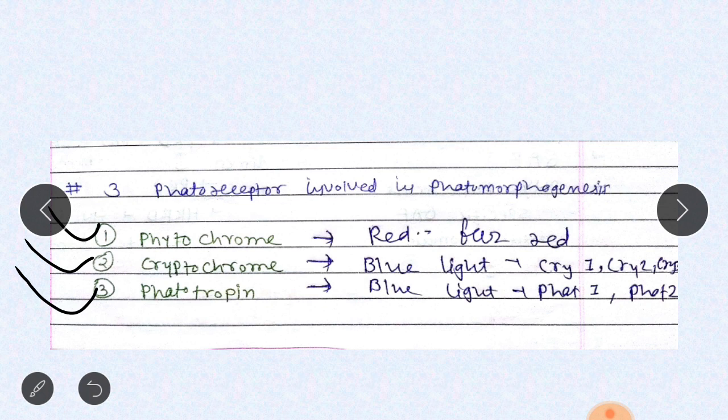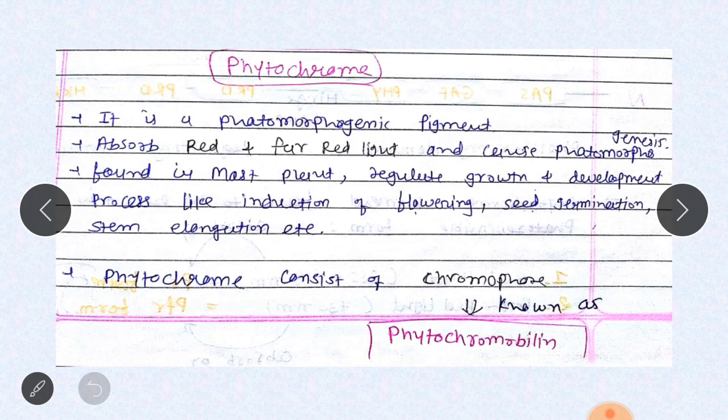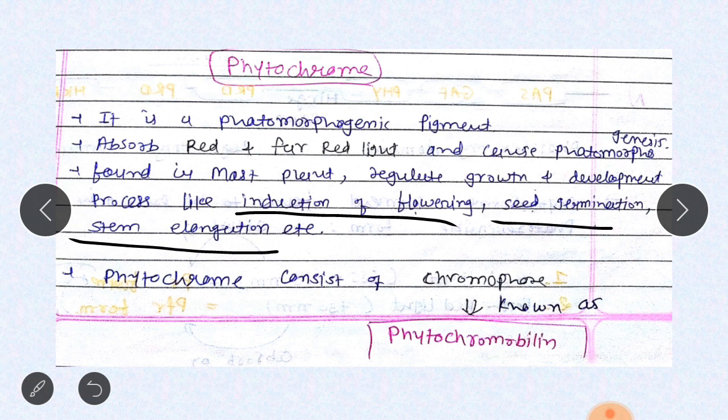Phytochrome is a photomorphogenic pigment that absorbs red and far-red light and causes photomorphogenesis, found in most plants. It regulates growth and development including induction of flowering, seed germination, and stem elongation. Phytochrome consists of a chromophore group known as phytochromobilin — this you have to remember.